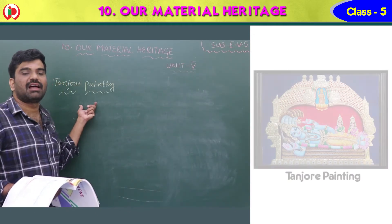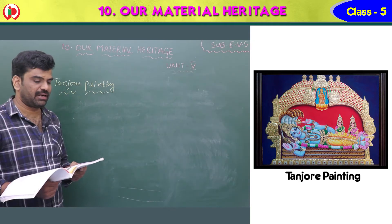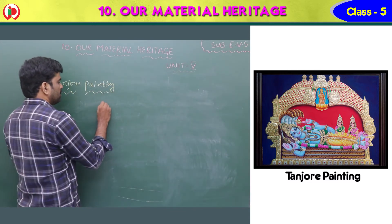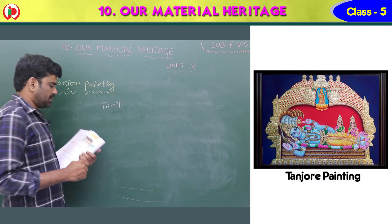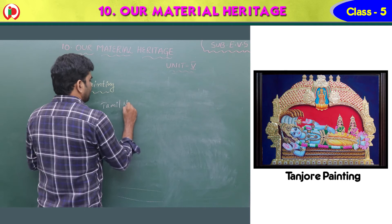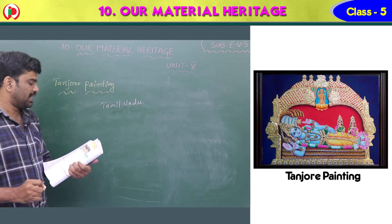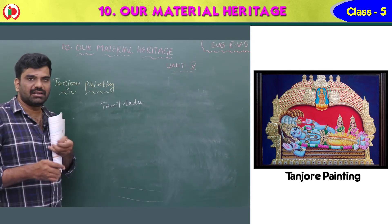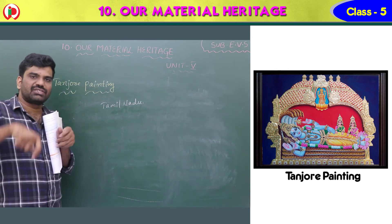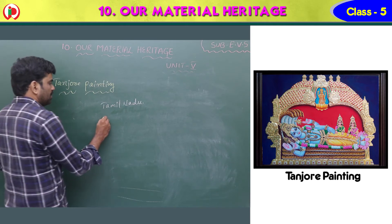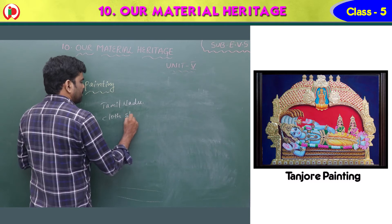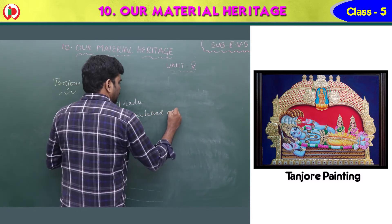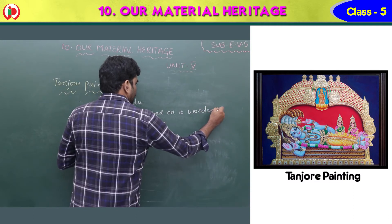Now see Tanjore painting. Tanjore style of painting belongs to the state of Tamil Nadu. This type of painting is done on a cloth stretched over a wooden plank — there will be a wooden plank and the cloth is stretched, and on that cloth this type of painting is done.